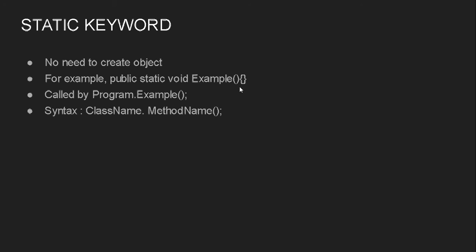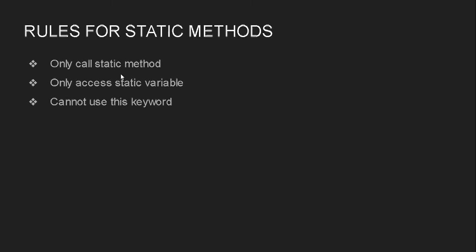If a function is non-static, we need to create an object first. That is the difference between static and non-static member functions and variables. Non-static means we need to create an object; we cannot access them directly. Static member functions and static variables can be accessed directly using the class name followed by the dot operator.